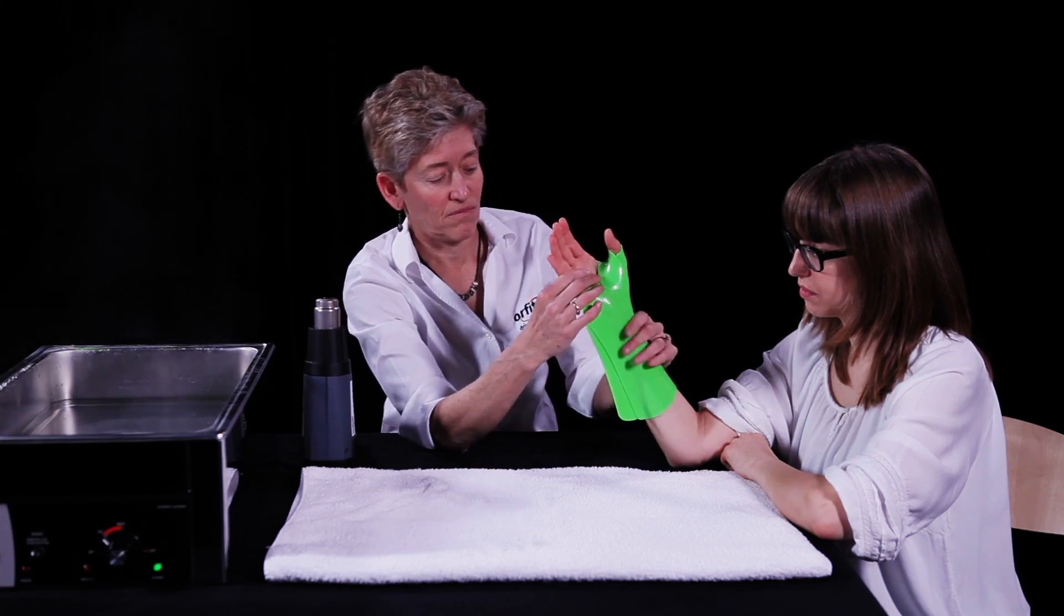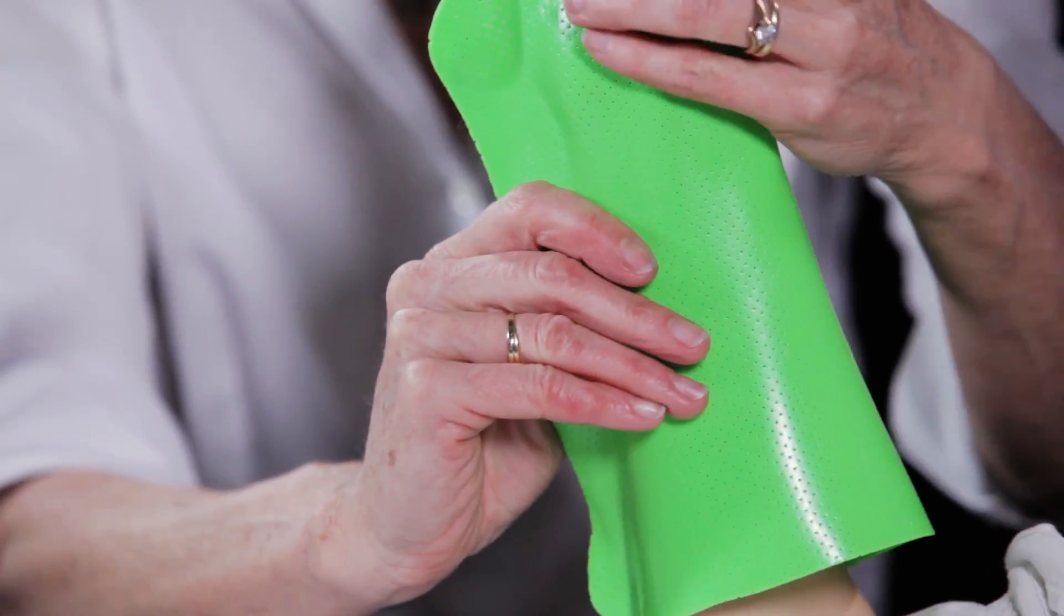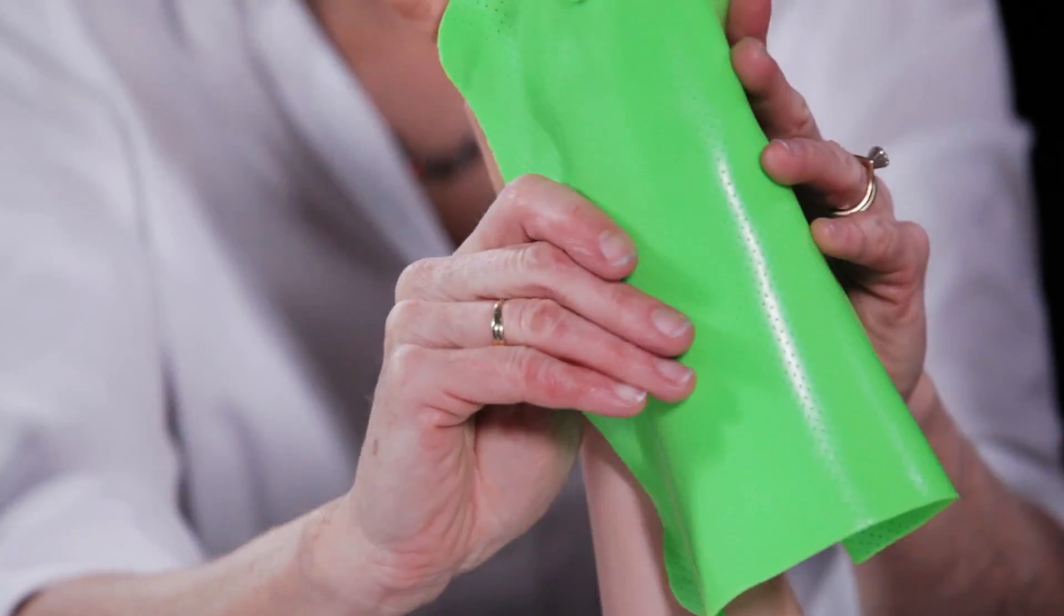When cooled and hardened, the material can be pulled apart along the ulnar border. Remove the orthosis from the patient for trimming.